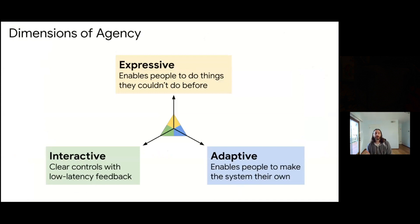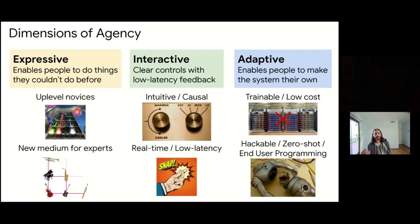The fundamental question we try to address with Magenta is how can we encourage cultural innovation by empowering individuals with new forms of creative agency. We think across three dimensions: expressivity — enabling people to do things they couldn't do before; interactivity — making things very responsive; and adaptivity — being able to change something and hack it to make it your own. In terms of expressivity, machine learning can fill in the gaps for a novice, producing more complicated outputs from simple inputs, or it can take very detailed inputs from an expert and express them in new ways — for example, models that let you morph in the space between different instruments.